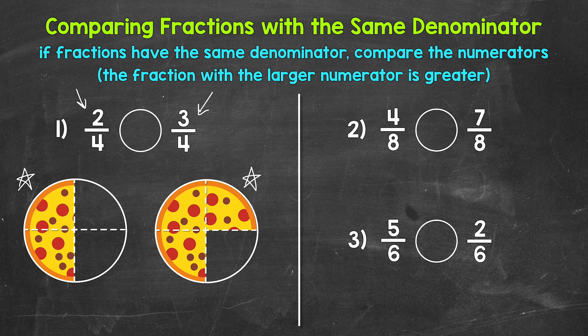Basically, when we have the same denominator, we have wholes that are divided into the same number of equal pieces. So all we have to do when comparing is see which fraction has more of the pieces — which has a larger numerator. So again, 3 fourths is greater. Remember, our comparison symbol always opens up towards whatever is greater. So our comparison symbol goes like this, and we can read this comparison from left to right as 2 fourths is less than 3 fourths.